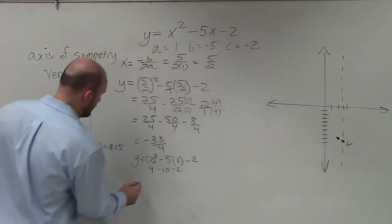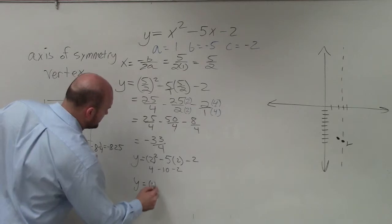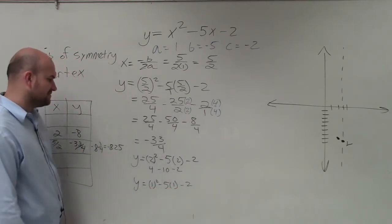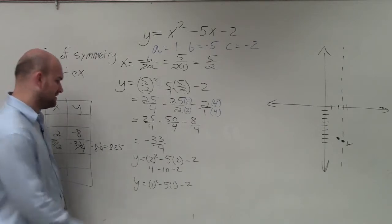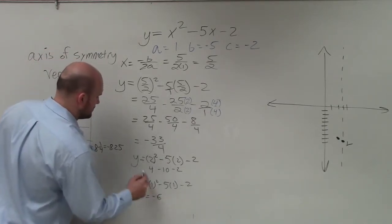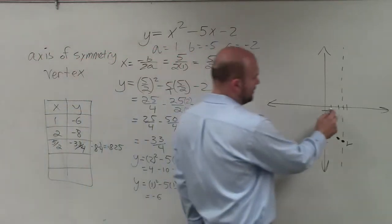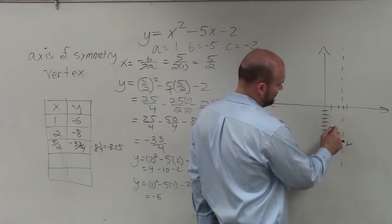And then let's do 1. y equals 1 squared minus 5 times 1 minus 2. 1 squared is 1 minus 5 times 1 is 5. So that's negative 4. That's negative 6. So at 1, I have negative 6. So I go over to 1, down 6. 1, 2, 3, 4, 5, 6.